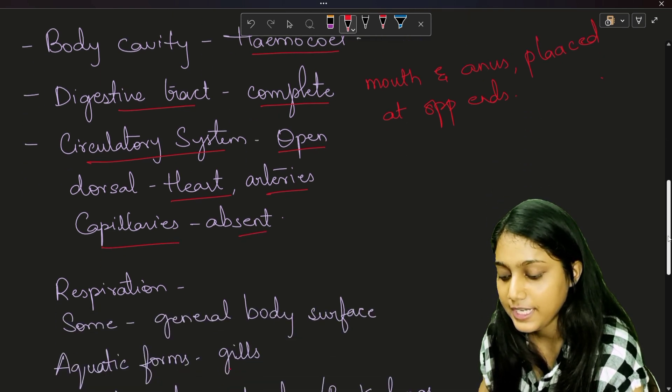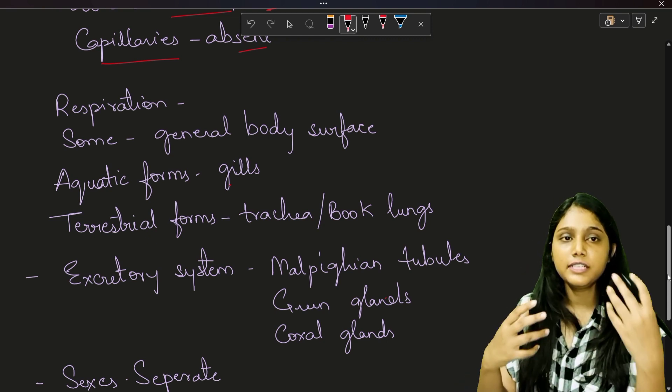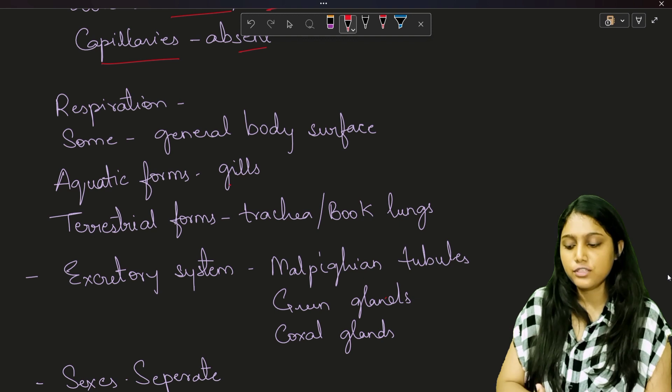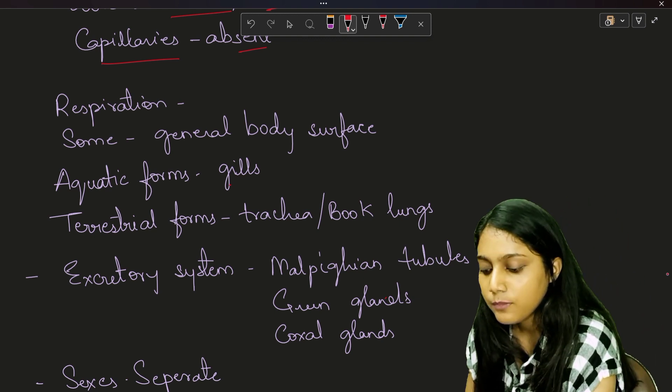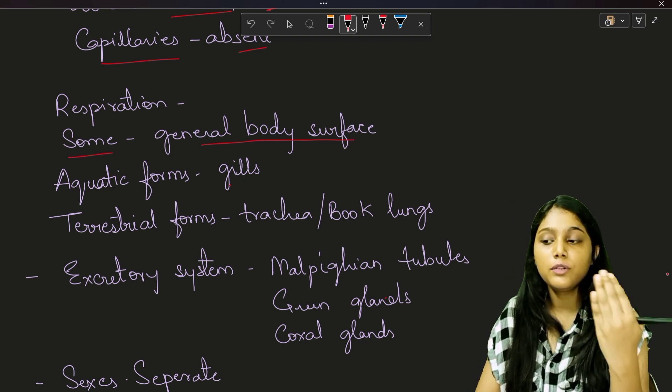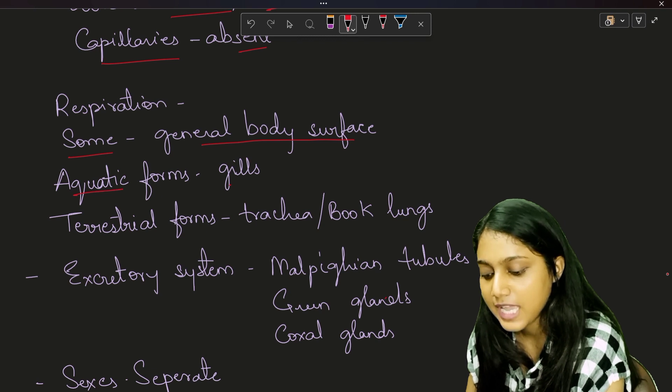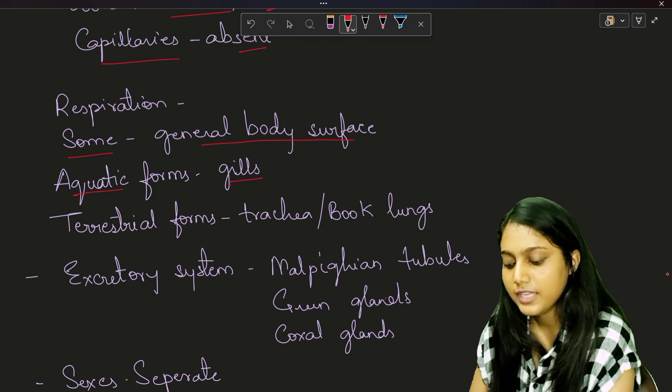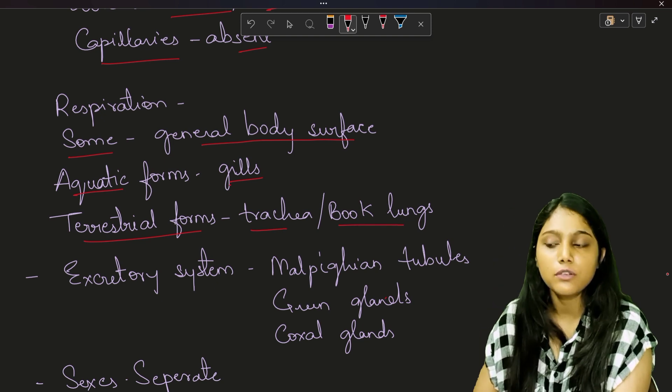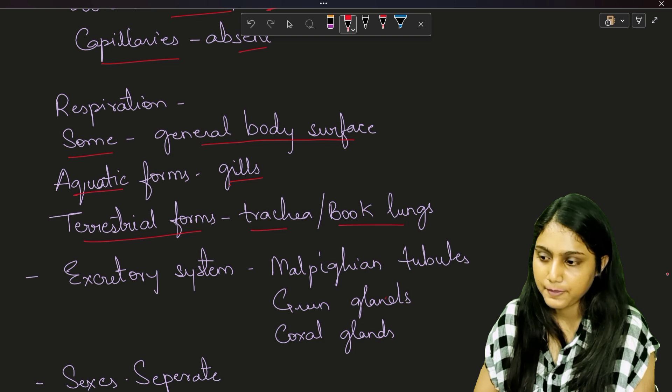Now talking about the respiratory system. Different organisms will have different respiratory structures for respiration. For example, some of the organisms respire through the general body surface, like general body surface through diffusion. A few forms such as aquatic forms have gills for respiration, whereas terrestrial forms have trachea and book lungs. So that depends on organism to organism which structures they use for respiration.